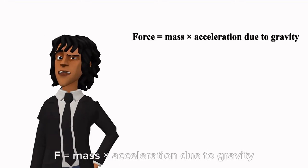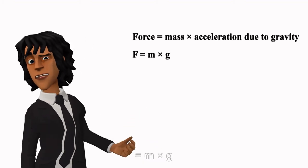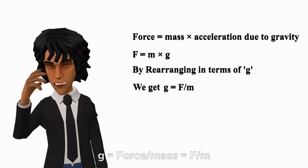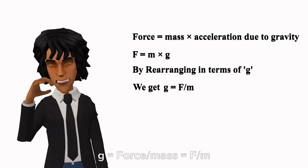F equals mass times acceleration due to gravity equals M times G. By rearranging in terms of G, we get G equals force divided by mass equals F slash M.